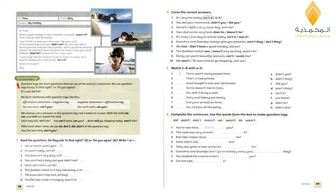Exercise five: match sentences one to eight with A to H. Number one: 'There aren't many people here, are there?' — F. Number two: 'That's a new printer, isn't it?' — E. Number three: 'Heidi bought a new pair of trainers, didn't she?' — H. Number four: 'Jamie doesn't live in Cairo, does he?' — T. Number five: 'You didn't bring a coat, did you?' — C. Number six: 'Billy and Sydney are lovely, aren't they?' — D. Number seven: 'Everyone arrived on time, didn't they?' — B. Number eight: 'You had fun at the party, didn't you?' — A.